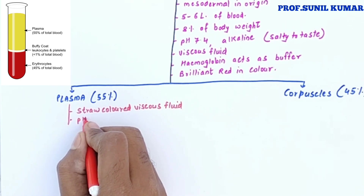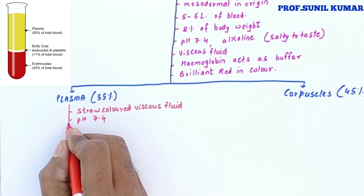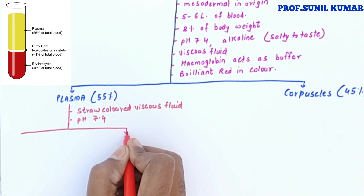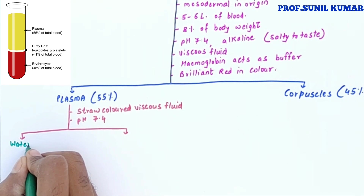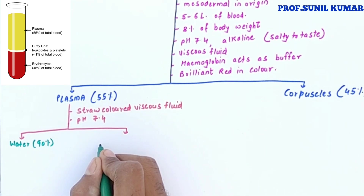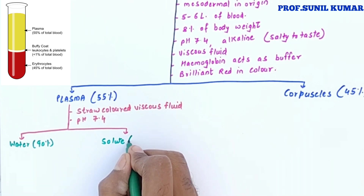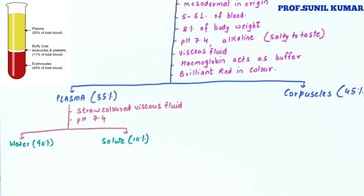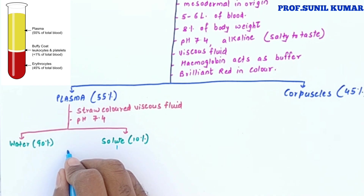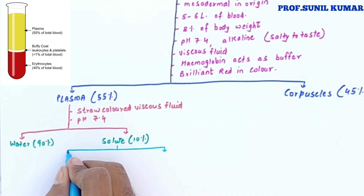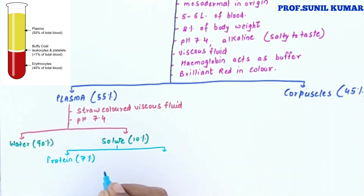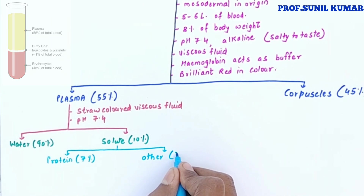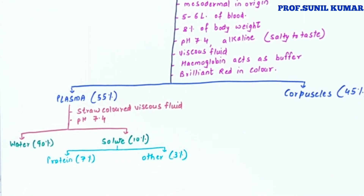When we talk about plasma, what exactly is it made up of? It is made up of water, which is 90 percent, and solutes, which are 10 percent. The solutes are further divided into two parts: seven percent will be all the plasma proteins, and three percent will be all other substances.